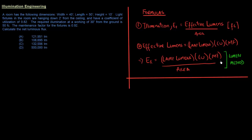The formula we'll be using is called the Lumen method. This is generally one of the simpler methods to use when you want to get an idea of lighting up a general space, for example a room. The illumination equals effective lumens over area, and the effective lumens are the lamp lumens — which is basically the net luminous flux. The unit for luminous flux is lumens.